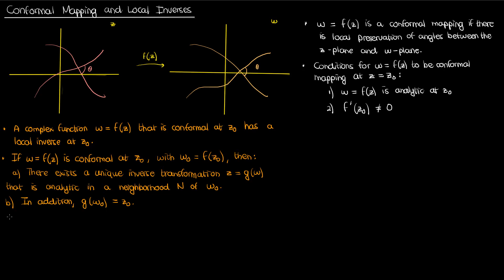In addition, if I take any complex number in the w-plane that is in the neighborhood n where g of w is analytic around w-naught, and I run that complex number through the transformation g, and if I then run the result of that through f, I get my original complex number back. So if I re-transform an inversely transformed complex number, I get back my original complex number. The other property of this local inverse g is that the derivative of g with respect to w is the reciprocal of the derivative of f with respect to z.